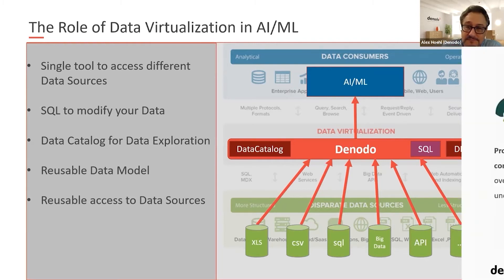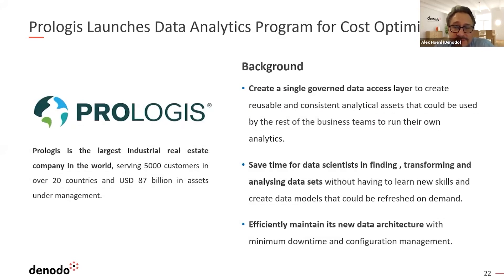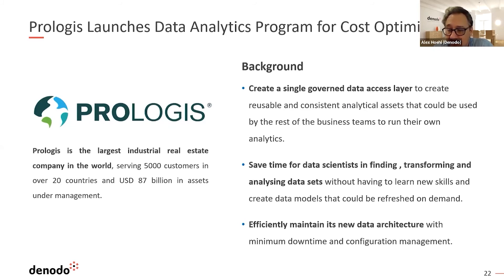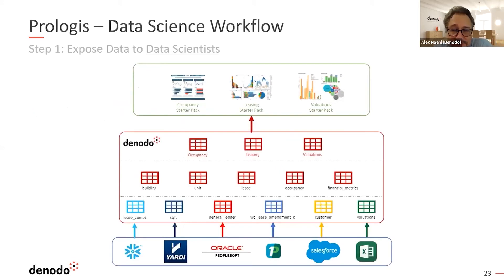Let me share a customer success story. This is Prologis, one of the largest real estate companies in the world, with thousands of physical warehouses storing items for clients like Amazon. They've been using Denodo in a number of ways, including leveraging it with Snowflake to move data from a physical data warehouse into a cloud warehouse. They also used Denodo for their data science projects.